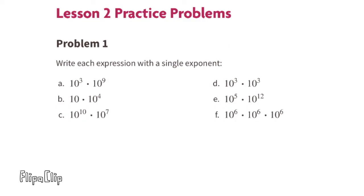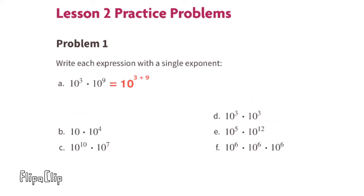Problem number 1. Write each expression with a single exponent. Part A: 10 to the power of 3 times 10 to the power of 9. Exponent 3 plus exponent 9 equals exponent 12, so the answer would be 10 to the power of 12.